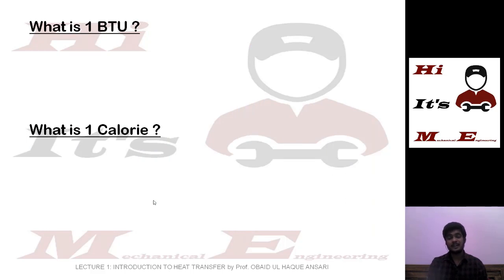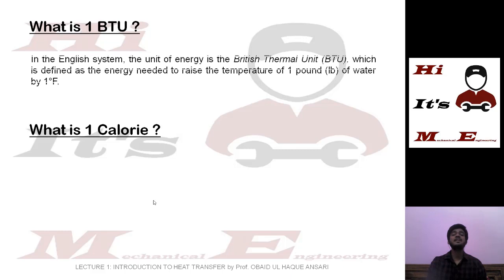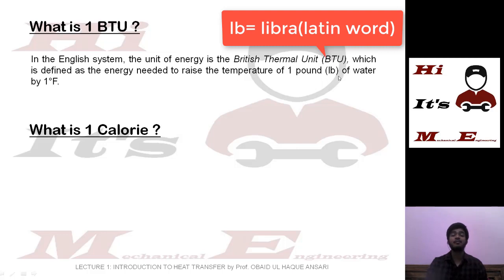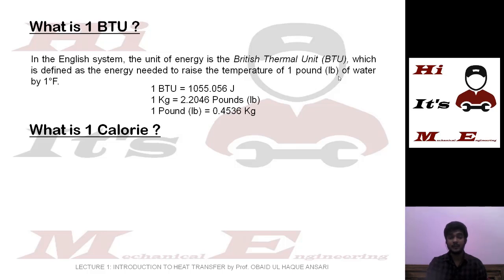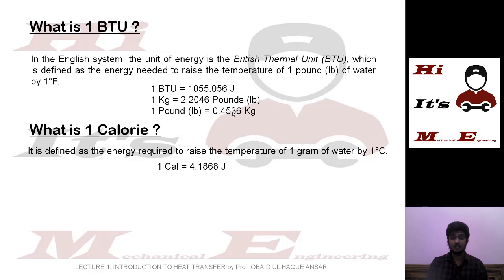What is one BTU? British Thermal Unit is the unit generally used in the English system. It is defined as the energy needed to raise the temperature of one pound of water by one degree Fahrenheit. The abbreviation 'lb' comes from 'libra,' a Latin word meaning pound. The relation is: 1 kg = 2.2046 pounds, so 1 pound = 0.4536 kg. One calorie is defined as the energy required to raise the temperature of one gram of water by one degree Celsius, and one calorie equals 4.1868 joules.